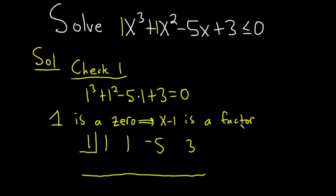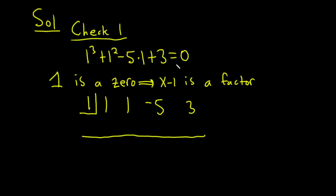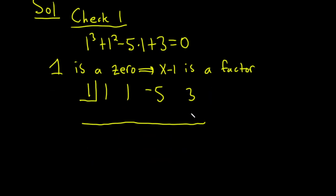And you can use that to factor the rest of this polynomial. So we wrote down the coefficients. Let me just double check them: 1, 1, -5, and 3. The first step in synthetic division is to take this number and bring it down. So 1. And then we multiply. 1 × 1 is 1. We add 1 + 1 is 2. Multiply. 2 × 1 is 2. We add. We get -3. Multiply. We get -3. We add and we get 0, which means that 1 is a zero, which we already knew.